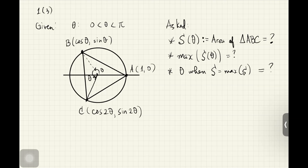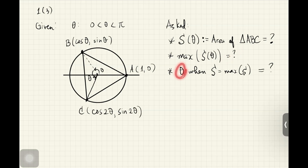Now we have these three points, and we can draw that triangle. The problem asks us to find the area of triangle ABC — that's the first part. The second part asks us to find the maximum value of that area, since the area is in terms of theta. Finally, we are asked for the value of theta that gives the maximum area.